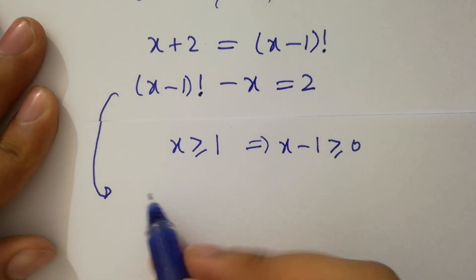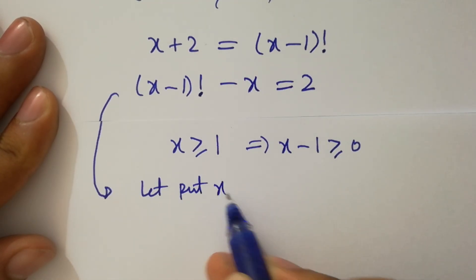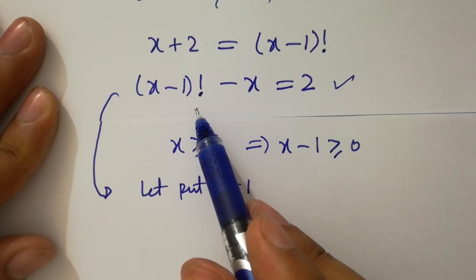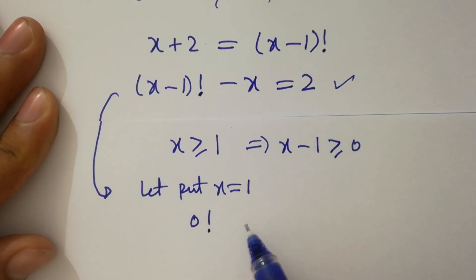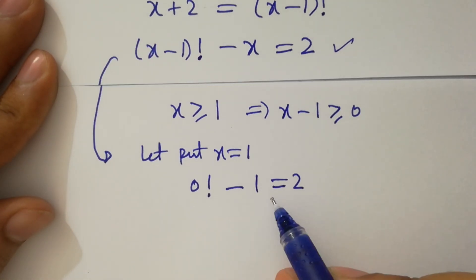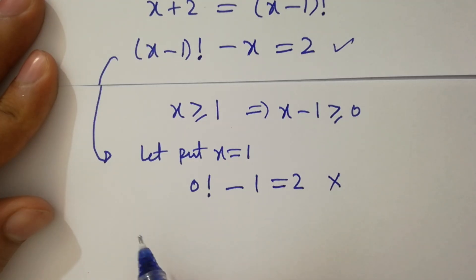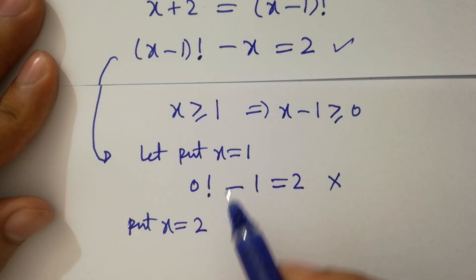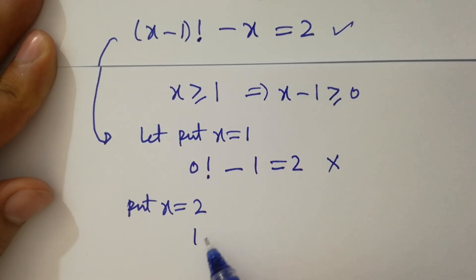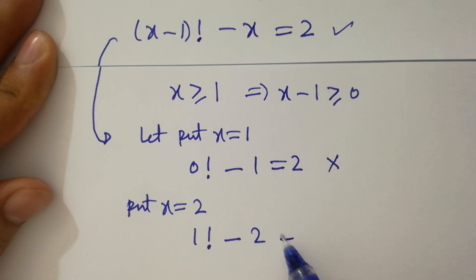Put x equals 1: (1-1) factorial minus 1 equals 0 factorial minus 1 equals 1 minus 1 equals 0, which does not equal 2 — not possible. Put x equals 2: (2-1) factorial minus 2 equals 1 factorial minus 2 equals 1 minus 2 equals negative 1, which does not equal 2 — not possible.